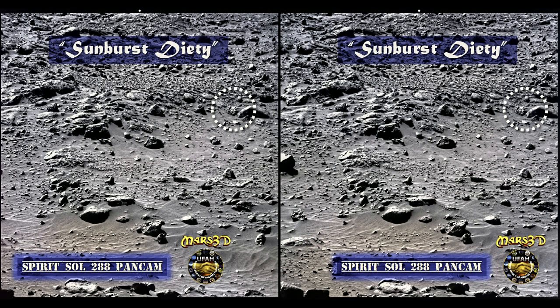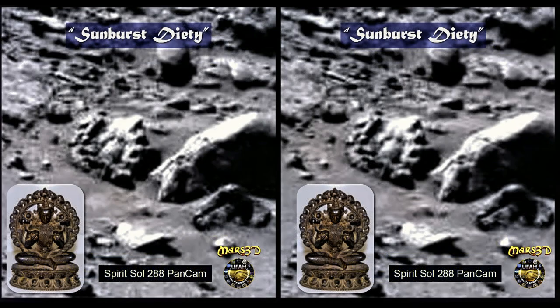This is a classic find that's been well covered by anomaly researchers all over the world, and to my knowledge this is the first non-NASA 3D rendering prepared from the data. What has been called variously a trinket, a sprocket, or a gear, I call the 'sunburst deity.' Take a look at the seated Shiva image in the lower left — this is the first thing that popped into my mind when I first saw this anomaly. The gear teeth would be the flames depicting the aura surrounding Shiva, and the head and body appear to be in the right locations and proportions. The legs are a bit of a mishmash but also seem to be in the right location and proportions.